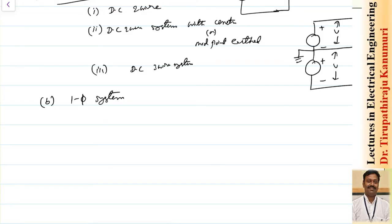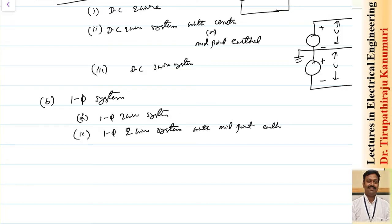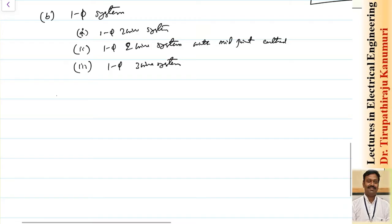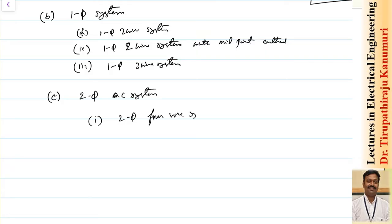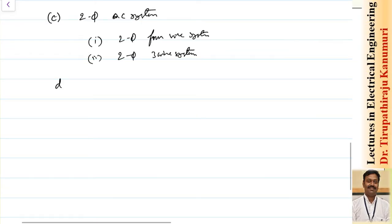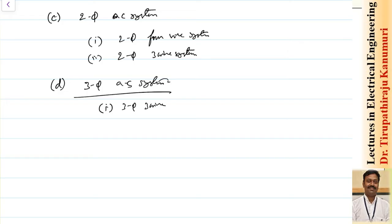Coming to AC systems, the first type is the single-phase system, which includes: single-phase two-wire system, single-phase two-wire system with midpoint earth, and single-phase three-wire system. We can also go for two-phase AC systems: two-phase four-wire system and the commonly used two-phase three-wire system. Similarly, there are three-phase AC systems: three-phase three-wire system and three-phase four-wire system.